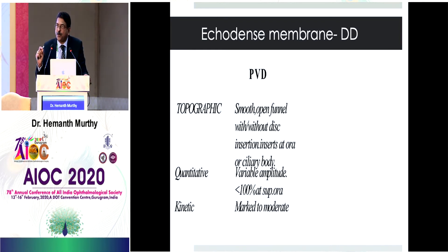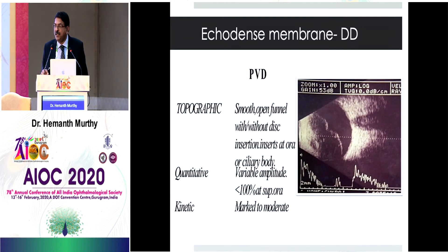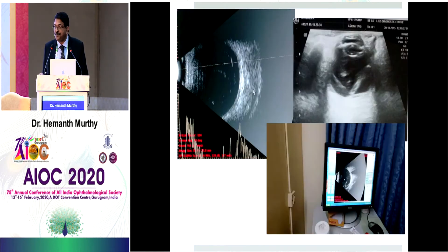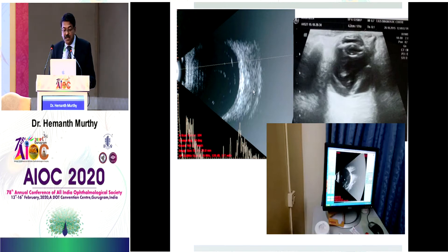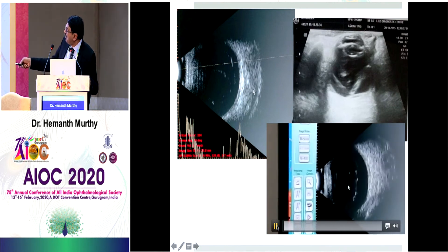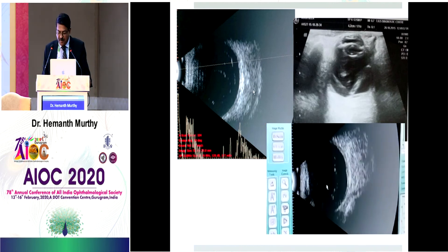If you change the orientation of the probe to evaluate the superior quadrant, the vitreous membrane always shows less than 100% reflectivity. In vitreous hemorrhage, hemorrhage deposits on the posterior hyaloid, so in the inferior quadrant it might be thicker and show 100% reflectivity, but in the superior quadrant you will never get that. There is also marked after-movement. Kinetic echography can make out certain differences — retinal detachment shows moderate after-movements, as opposed to marked after-movements in vitreous detachment.